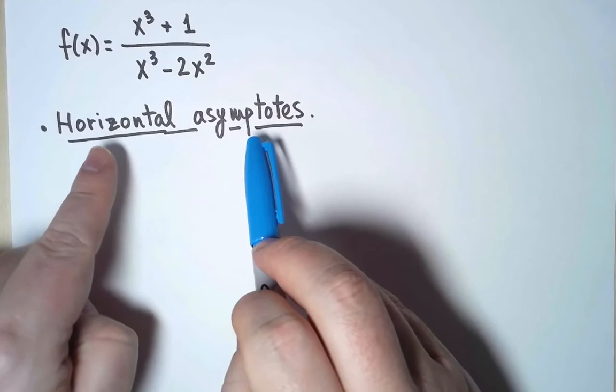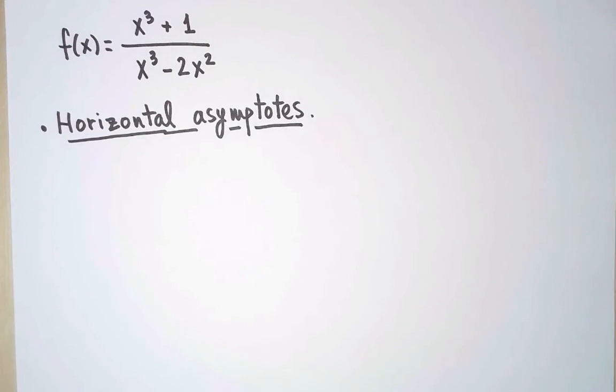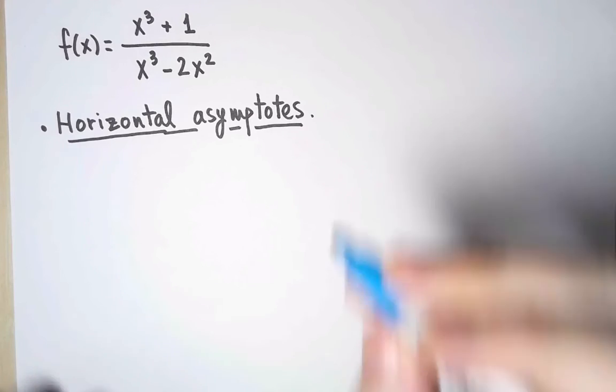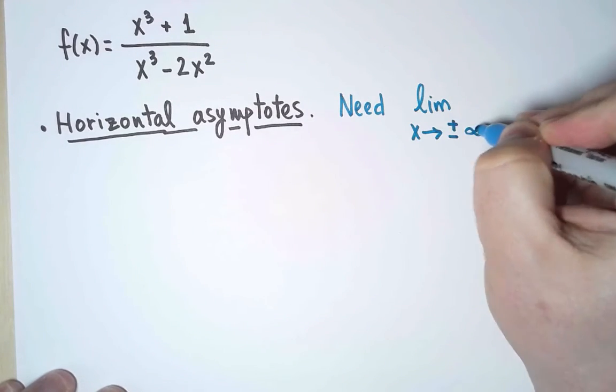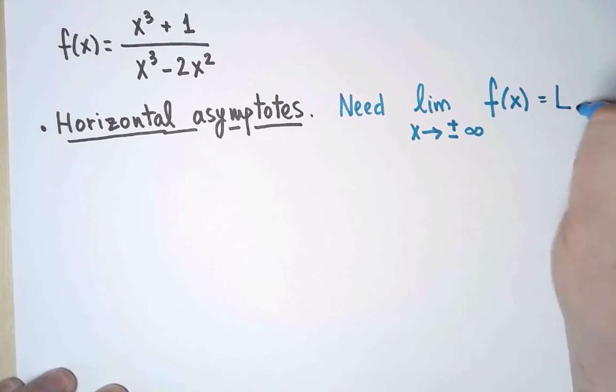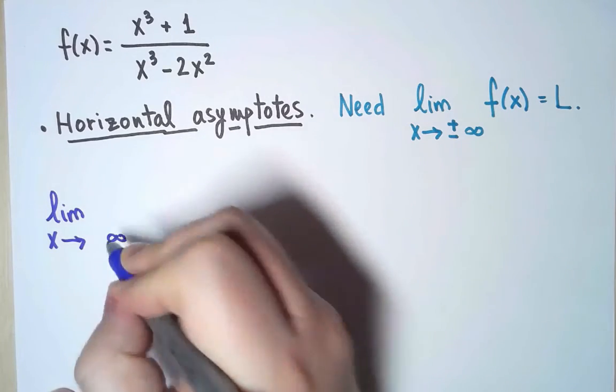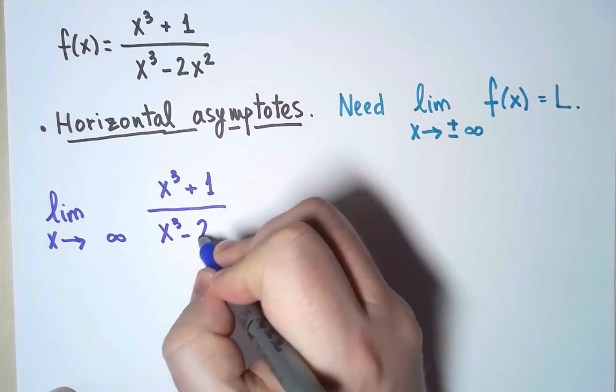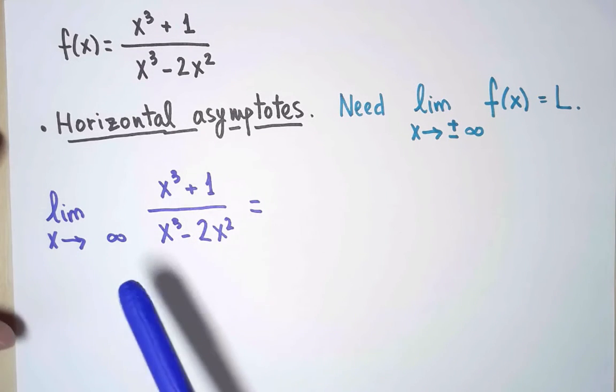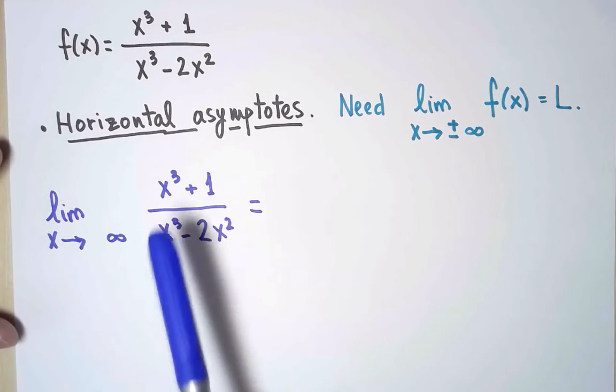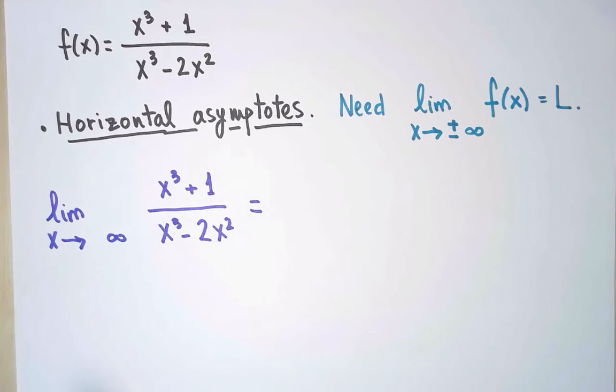Next, let's look for horizontal asymptotes. To have a horizontal asymptote, I need the limit, as x approaches either plus or minus infinity of the function, to exist and be a number. I'll begin with infinity. Let's compute the limit of this function as x approaches infinity. And perhaps you already know what the answer is. It's a quotient of polynomials, so only the leading terms matter. Or perhaps you would like to use L'Hôpital three times.